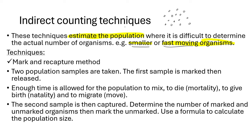The first indirect counting technique is known as the mark and recapture method. In the mark and recapture method, two population samples are taken. The first sample is marked, then it is released. For example, if you have many ants, you take a sample of ants — it doesn't matter how many — and then you mark them and release them back into their habitat.